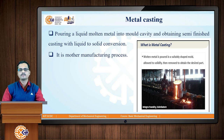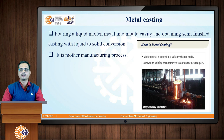Why is it called the mother manufacturing process? Because this process gives birth to all other types of manufacturing processes. It is also the oldest near net shape manufacturing process that man has invented. On this slide we are observing a photograph of a foundry wherein we are pouring liquid molten metal into a mould cavity.